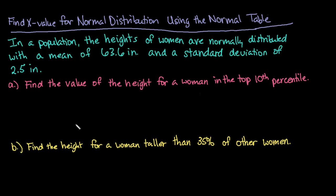Hi, for this video I want to show you how to find the x value or the random variable x for a normal distribution, and I will be using the normal table to help you find this. In a population, the heights of women are normally distributed with a mean of 63.6 inches and a standard deviation of 2.5 inches.